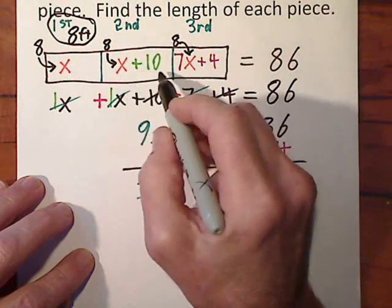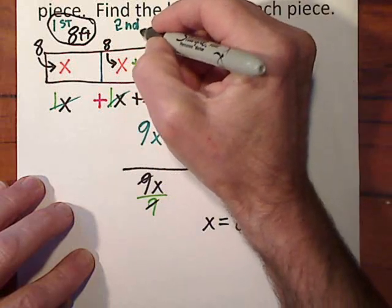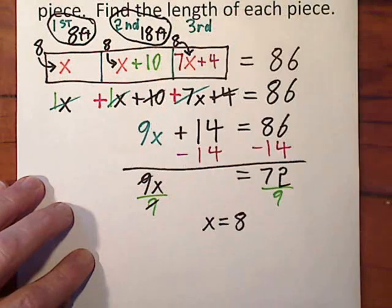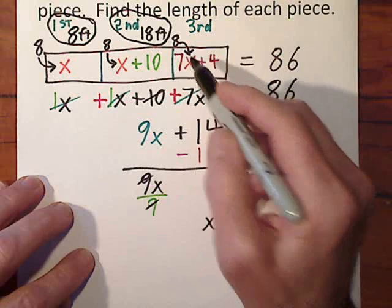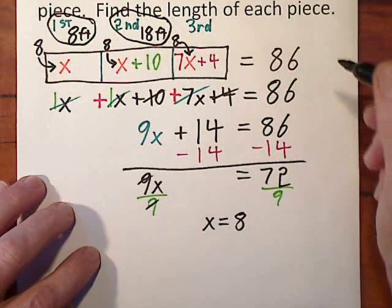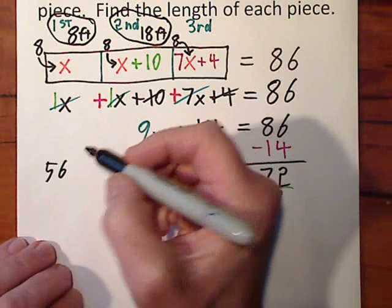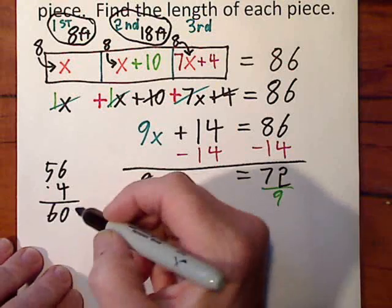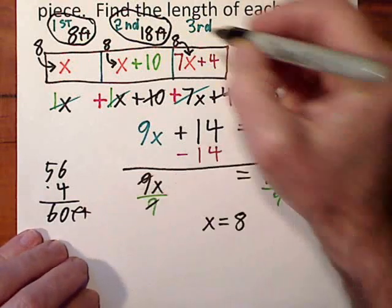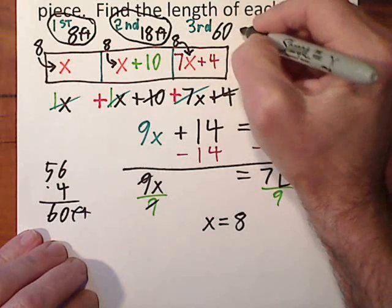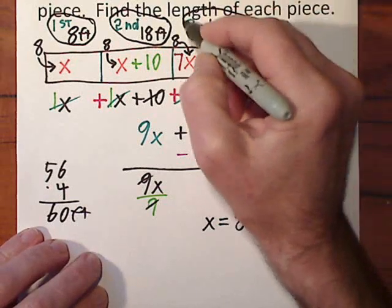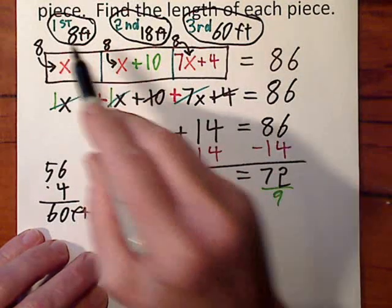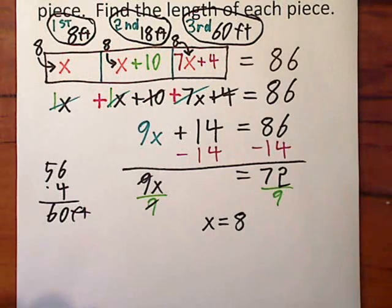The second one, 8 plus 10. So this is 18 feet. That's our second piece. The third one, you have to do a little more calculation. 7 times 8 is 56 plus 4. So that gives us 60 feet. So when we plug it in, the third piece is 60 feet. And if you add these three together, 60, 18, and 8, you will get 86. So we found out the length of each piece.